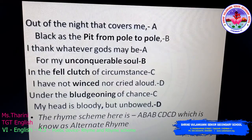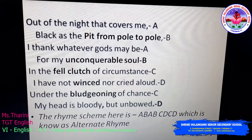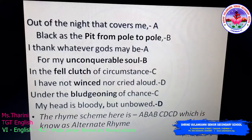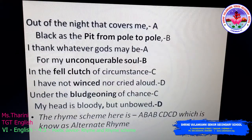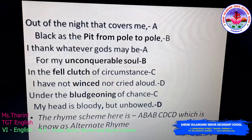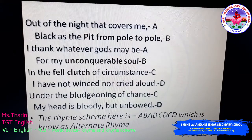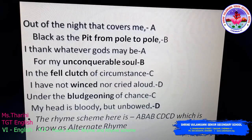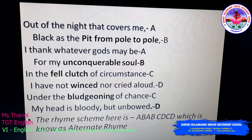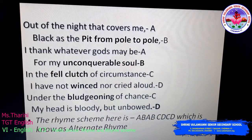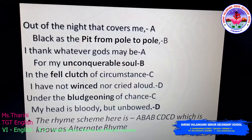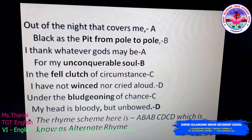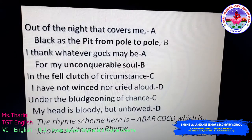'Under the bludgeonings of chance' — 'circumstances' and 'chance' is a half or para rhyming word, so I mark it as C again. Next: 'My head is bloody but unbowed' — 'aloud' and 'unbowed' is a full rhyming word, so I mark it as D. This is the pattern; this is how the rhyme scheme works.